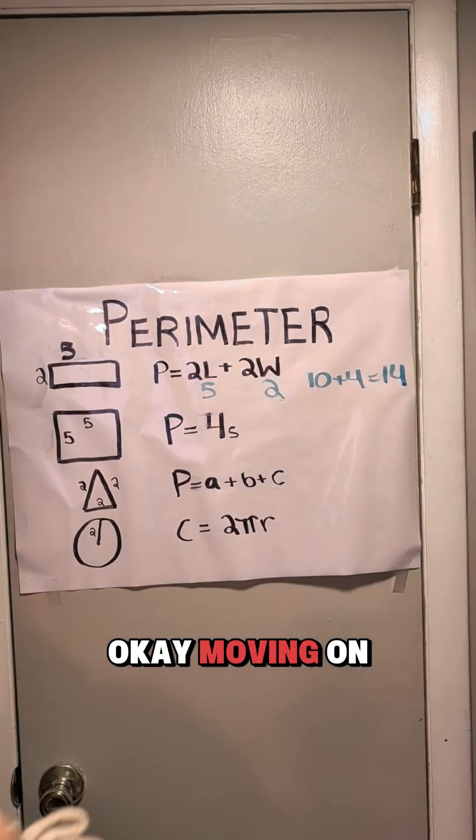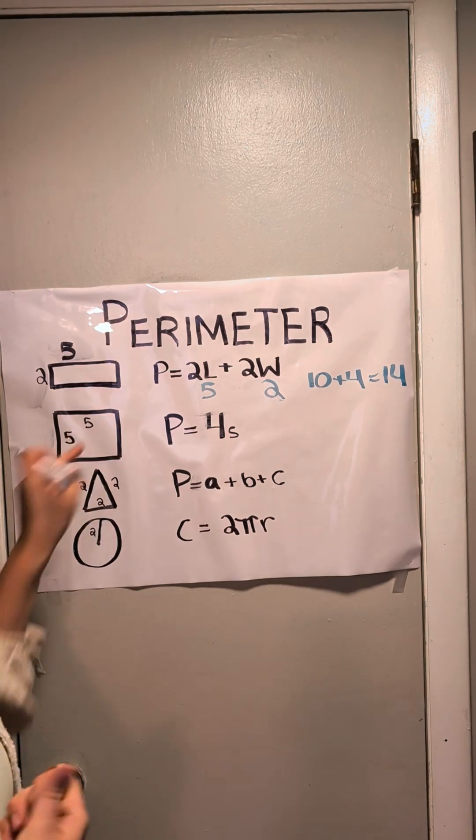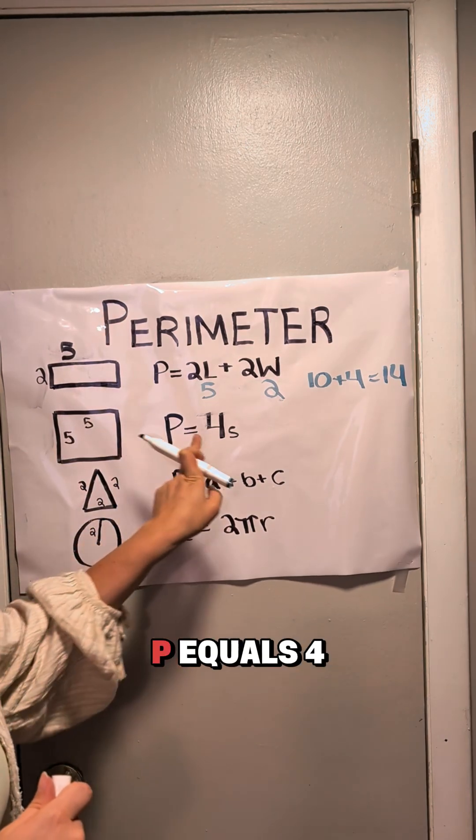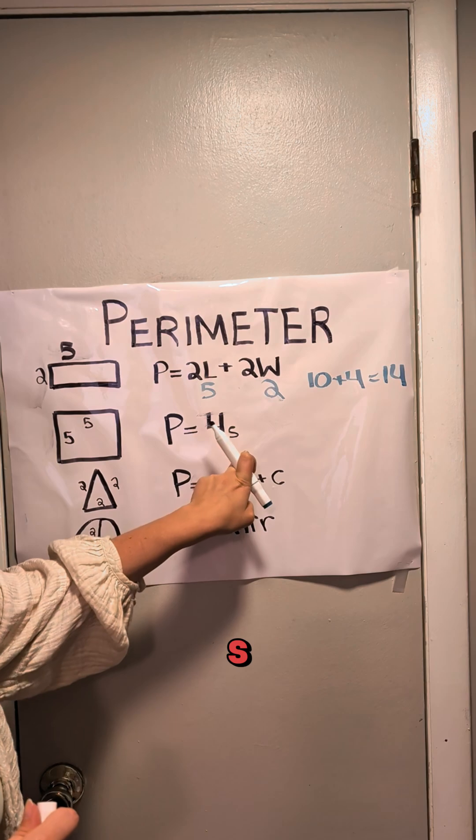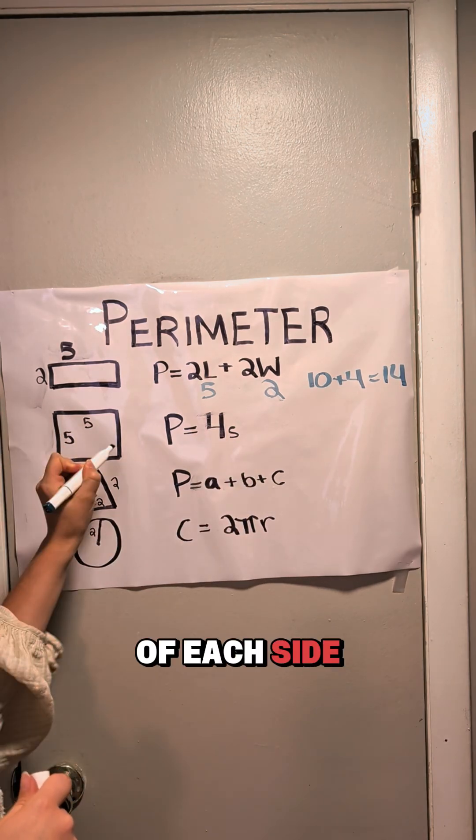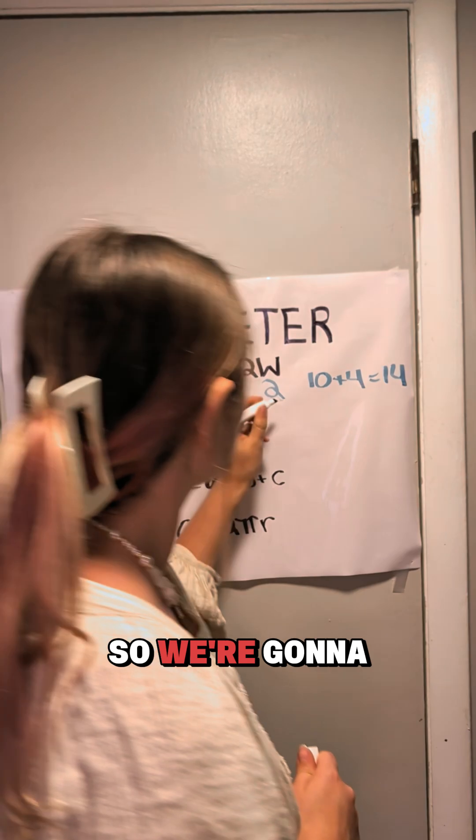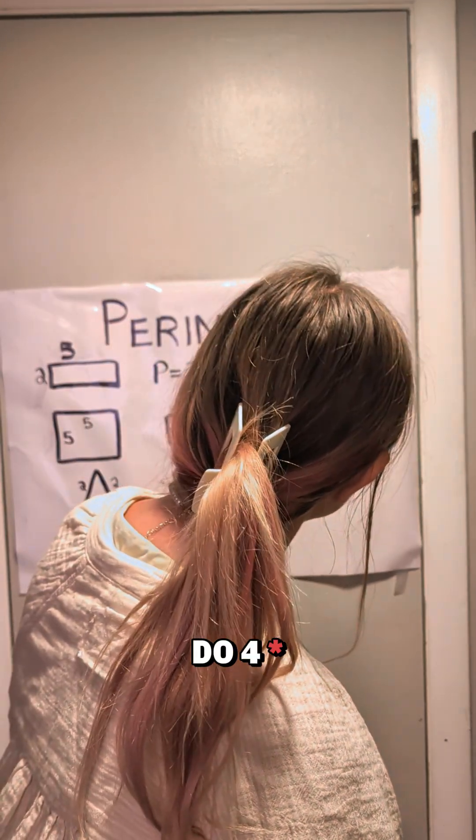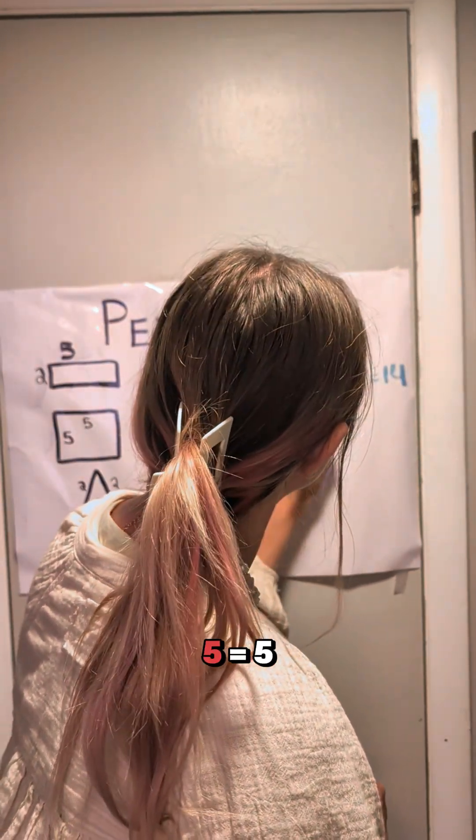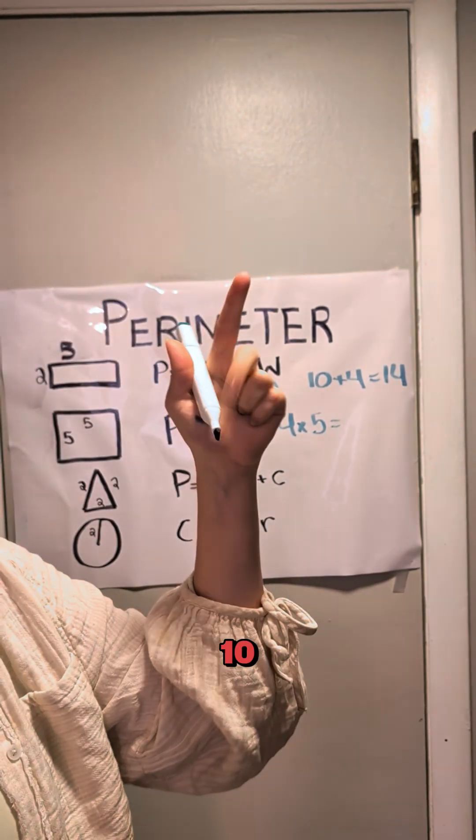Okay, moving on to a square. The formula is P equals 4S. So the length of each side of this square is 5. So we're going to do 4 times 5 equals 5, 10, 15, 20.